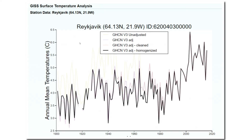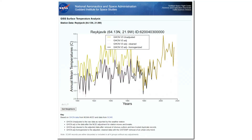Overpeck was probably looking at graphs like this one from NASA. The graph shows temperatures at the capital of Iceland, Reykjavik, and it showed warming from 1900 to about 1950, then cooling until the 1980s, and then sharp warming since the 1980s. Overpeck probably looked at this recent warming and said, we don't have any way to explain that, so it must be due to greenhouse gases.